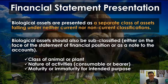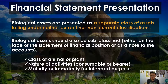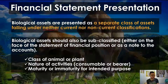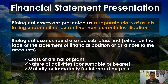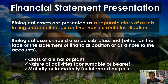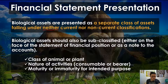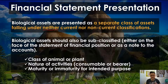A biological asset should be subclassified. If you are presenting animals in your financial statement, either on the face or in the notes to the financial statements, you should differentiate the animals by classes — cattle separate from pigs, separate from goats — and differentiate by average age group, such as newborns versus mature animals. You also classify by nature of activity: is a particular animal being used as a sow (bearer), or is it being fattened and sold immediately (consumable)? That's the discussion for Part 2.